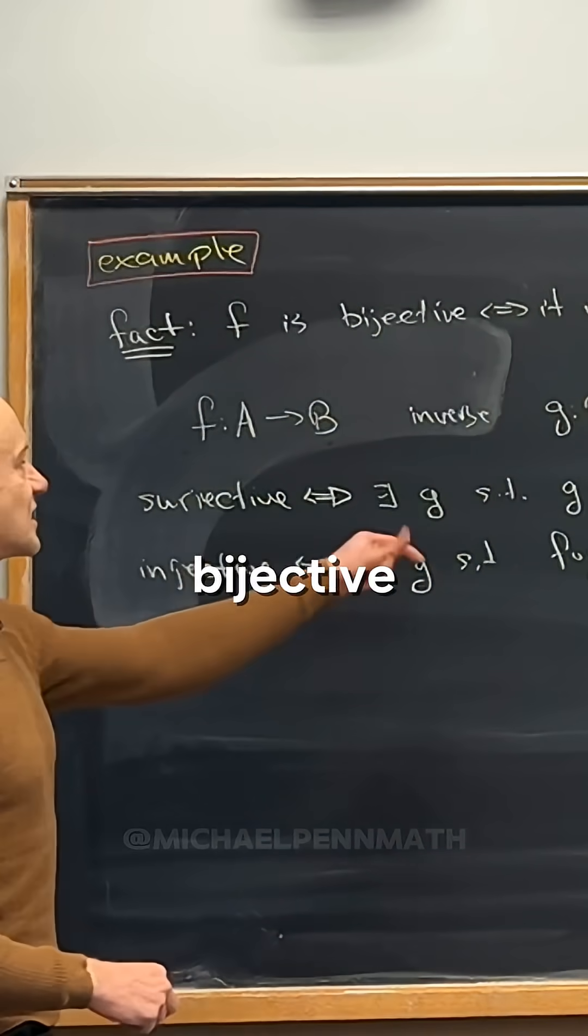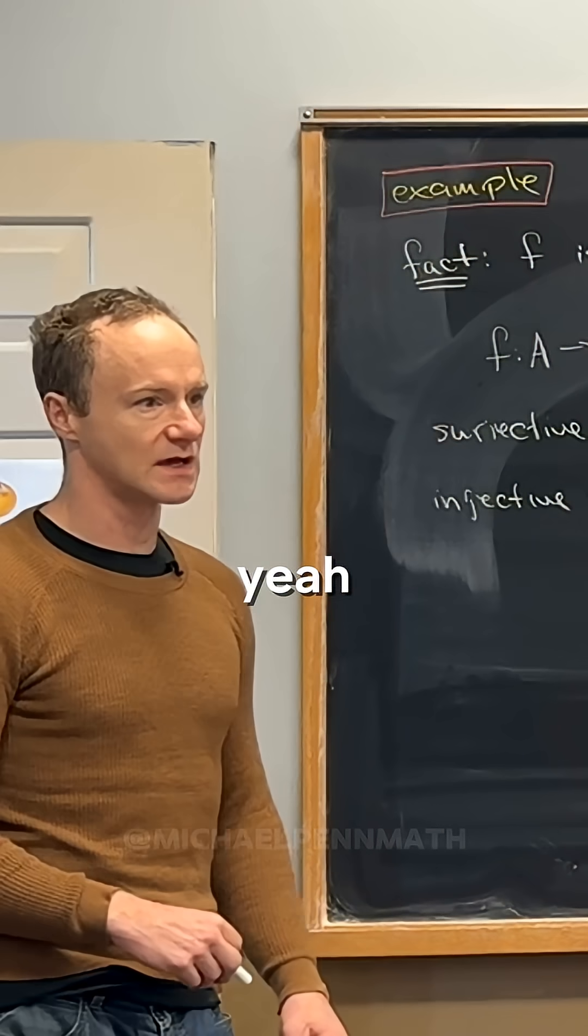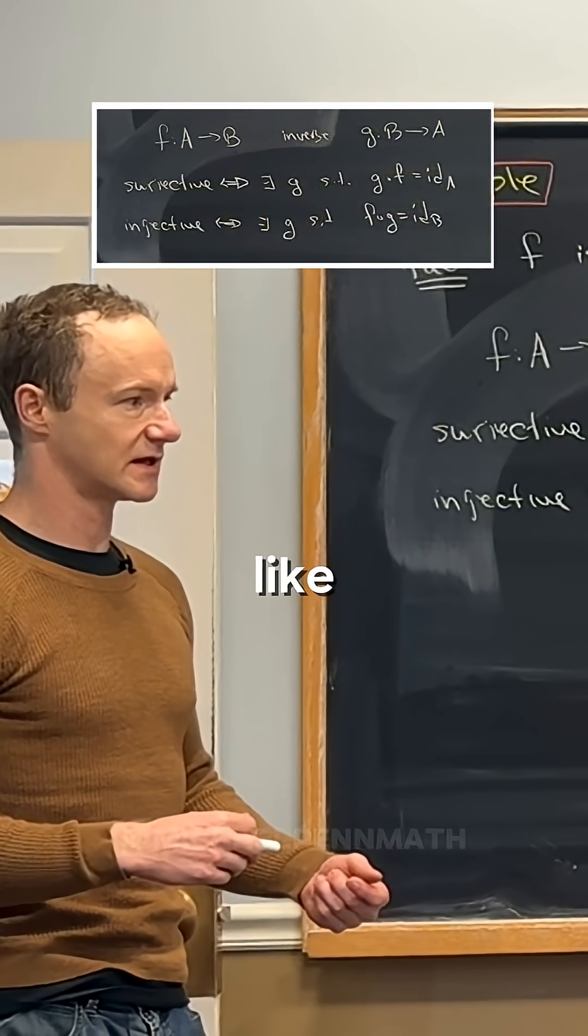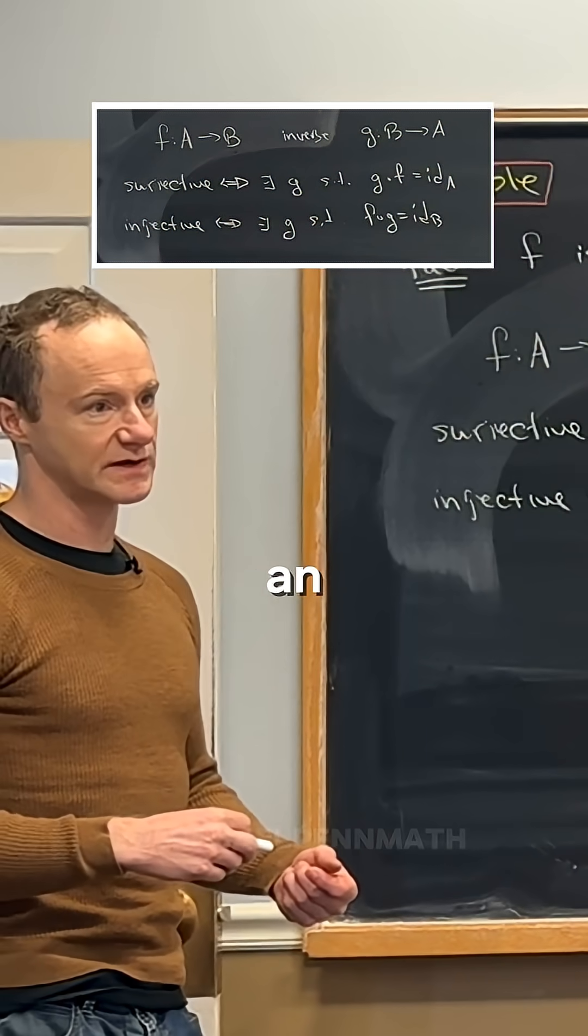But then if it's bijective, then there's a two sided inverse. And so you can kind of see that there's sometimes like only one side to an inverse.